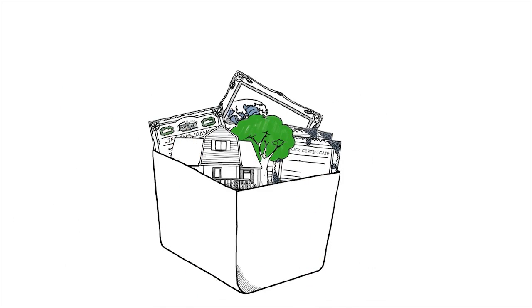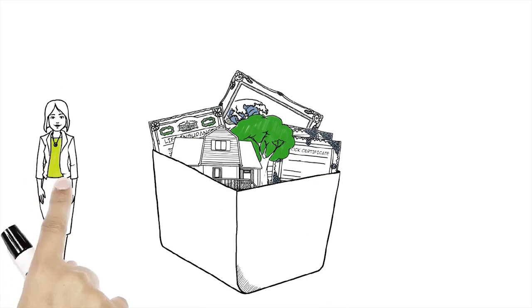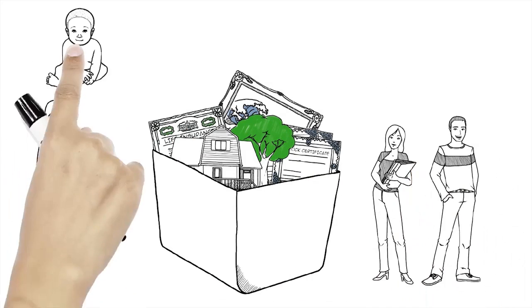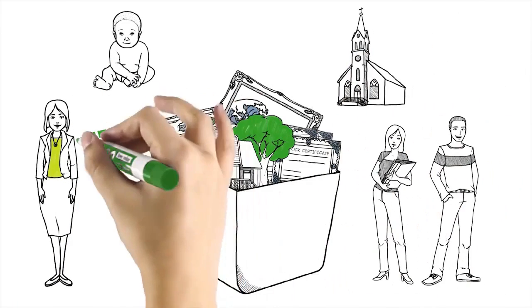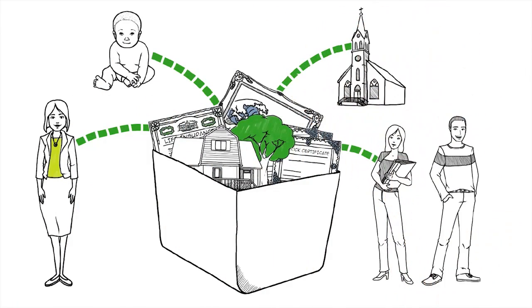As grantor, you decide who receives the assets inside your trust. Typically, your spouse, your children, grandchildren, and charities of your choice are the beneficiaries who receive the assets held in trust.